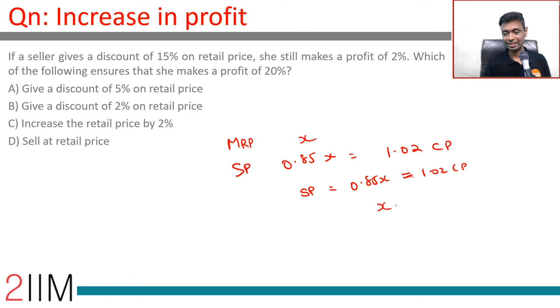Think about this: X equals 1.02 by 0.85CP. This is 6 by 5CP.